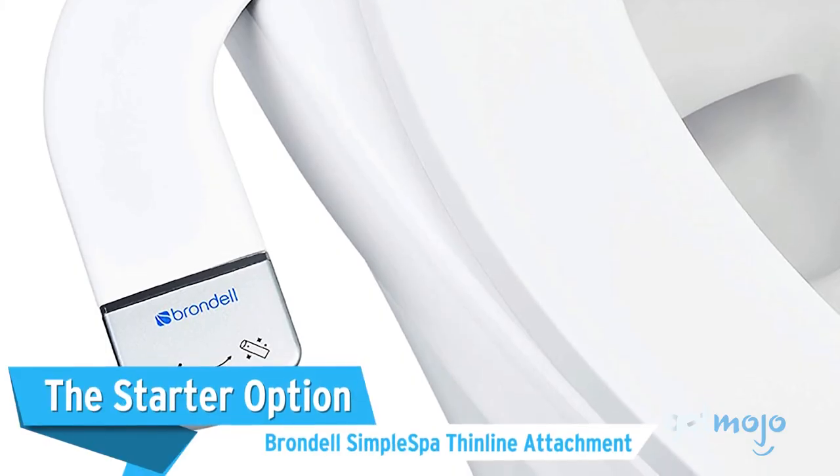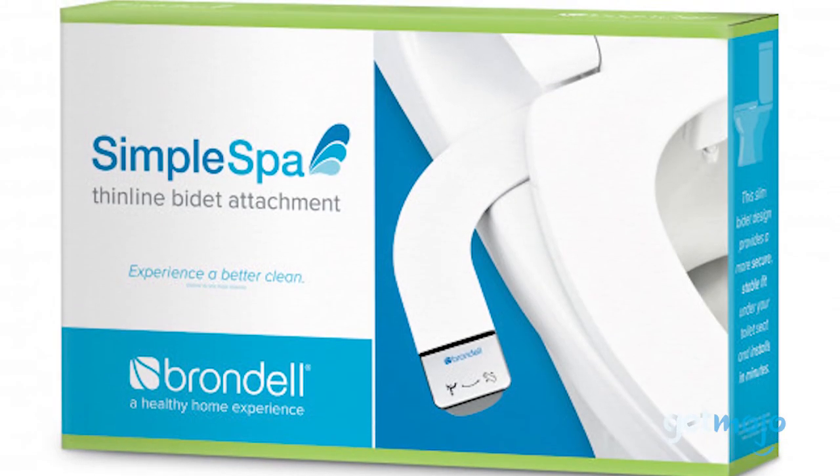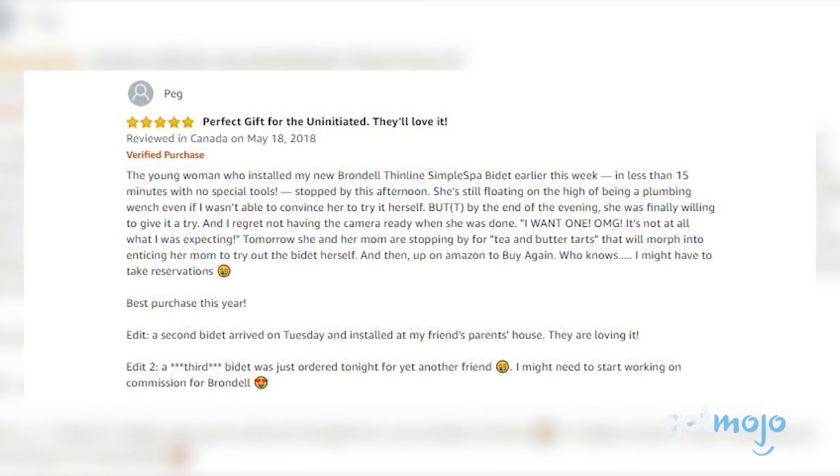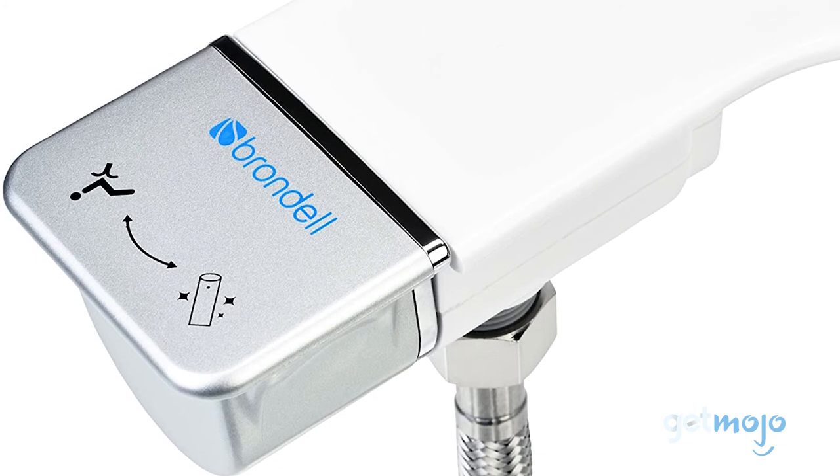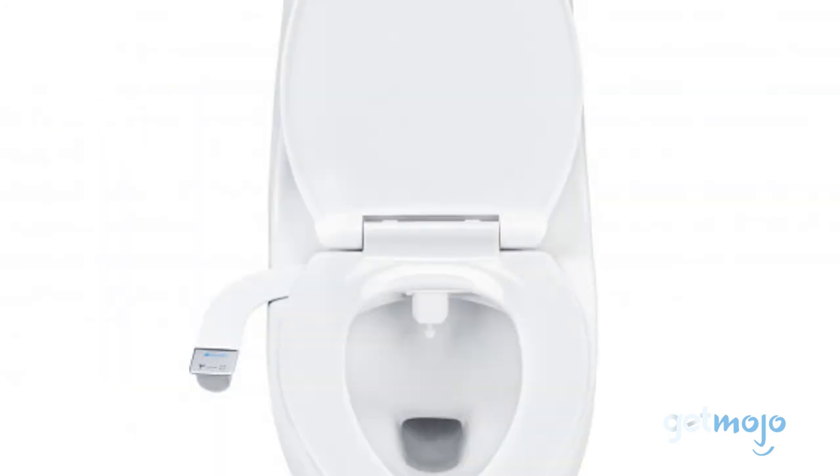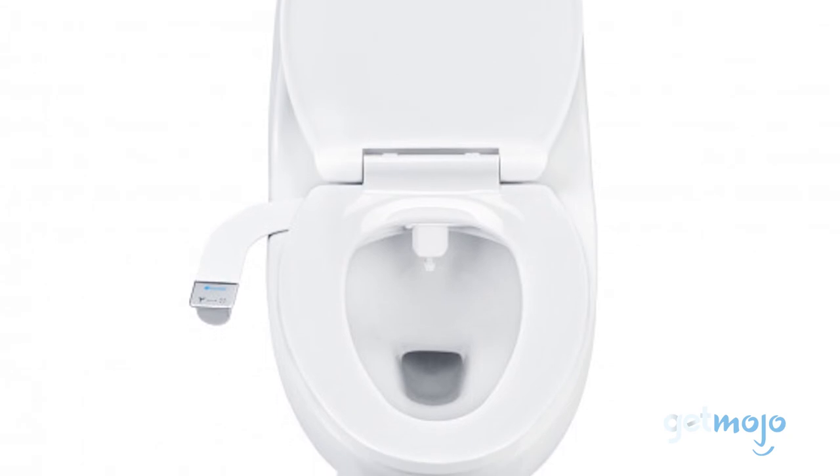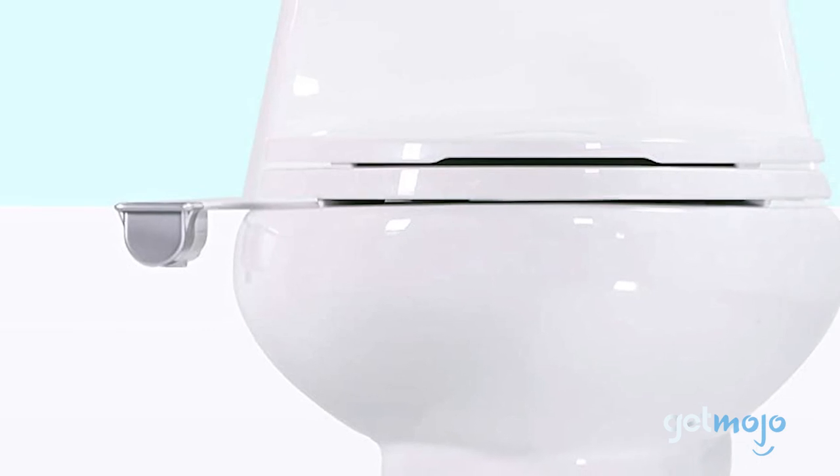The starter option. The Brondel Simple Spa Thinline Attachment. If you're not quite ready to commit to buying a bidet just yet, why not try a bidet attachment first? At just $60, this Brondel model may only feature cold water, but it still offers pressure control. And best of all, it's super discreet, being able to fit to your current toilet seat seamlessly. And you won't have to worry about matching the style of it with the rest of your bathroom either.